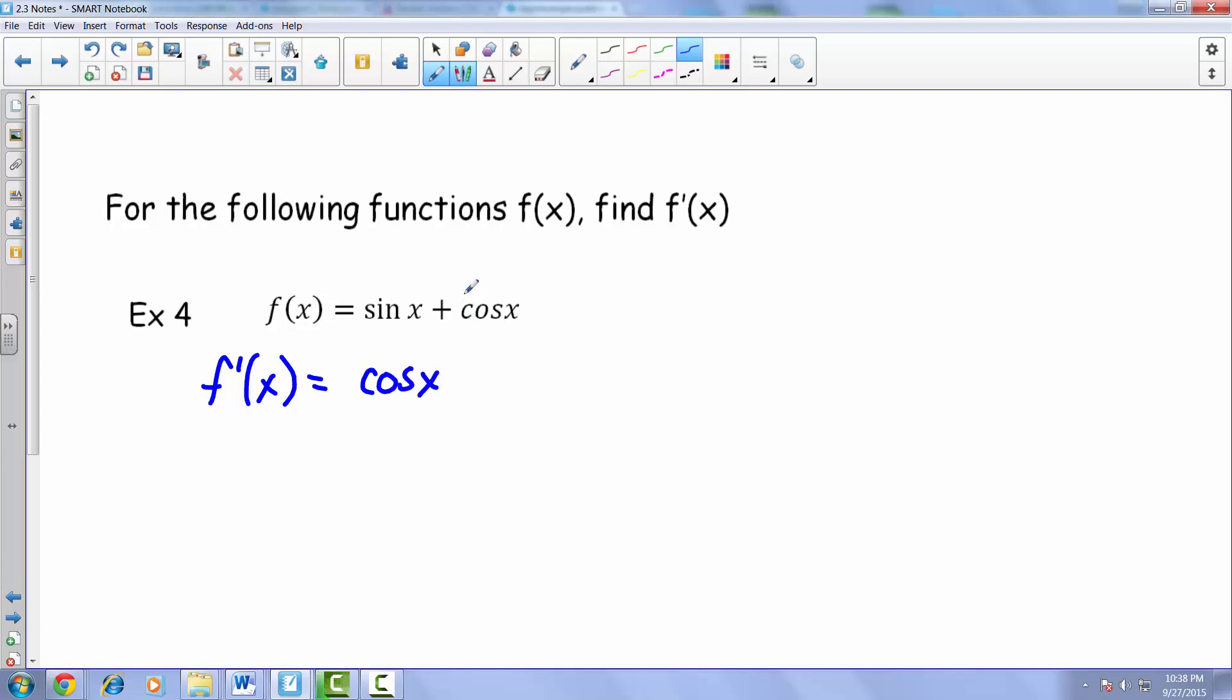And then ultimately, if you try and take the derivative of cosine of x, that came out to be negative sine of x.